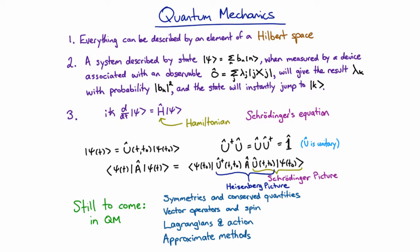Those elements in Hilbert space evolve forward in time according to Schrödinger's equation, which depends on the Hamiltonian. The Hamiltonian is just a linear operator associated with energy, which is Hermitian.